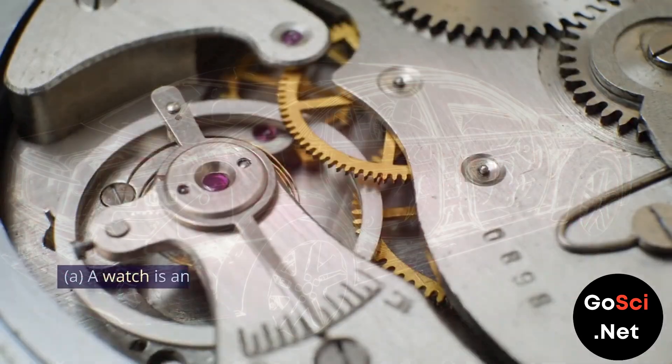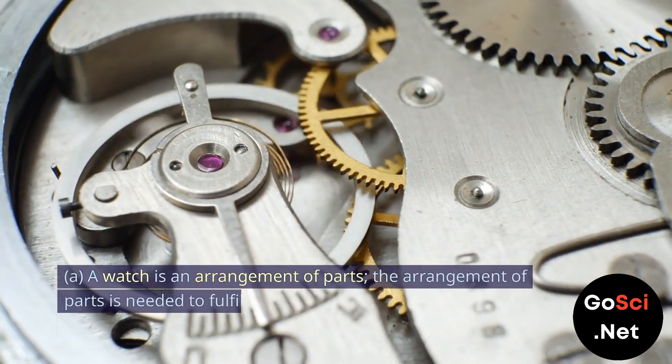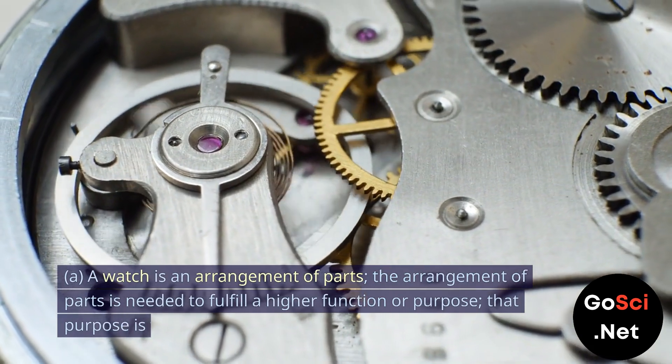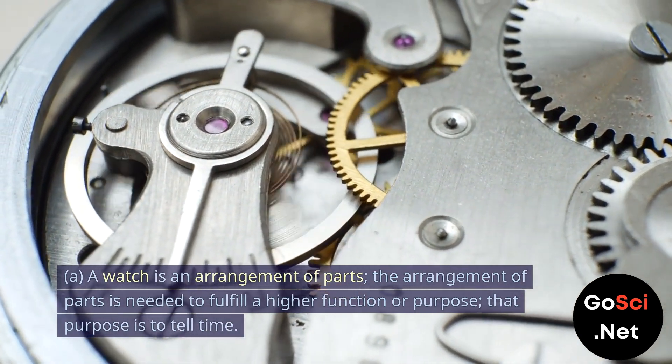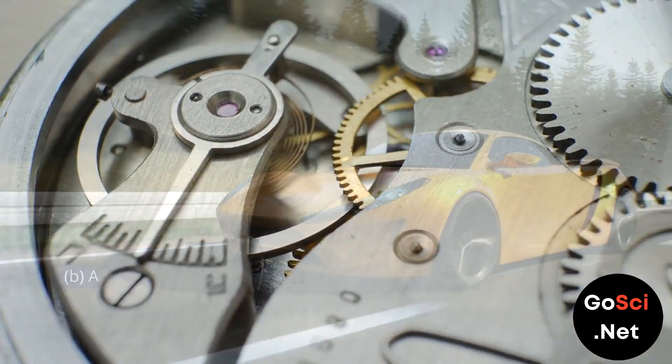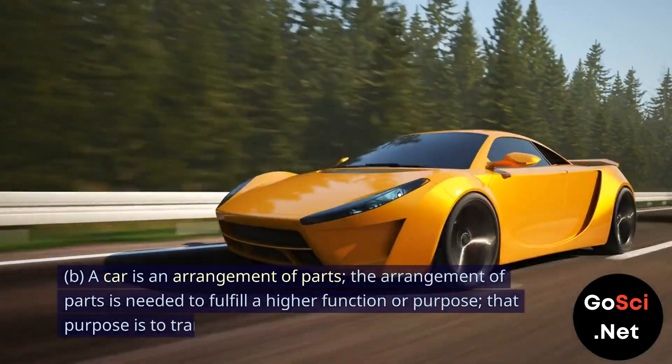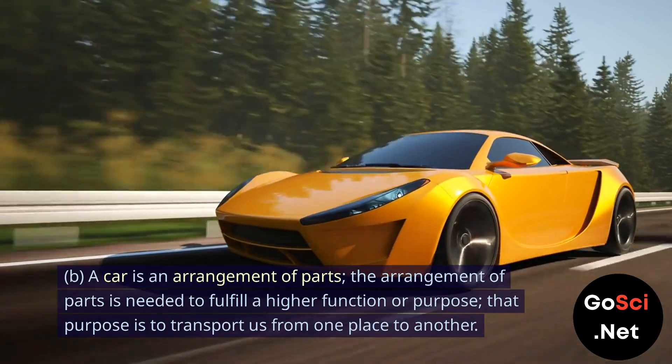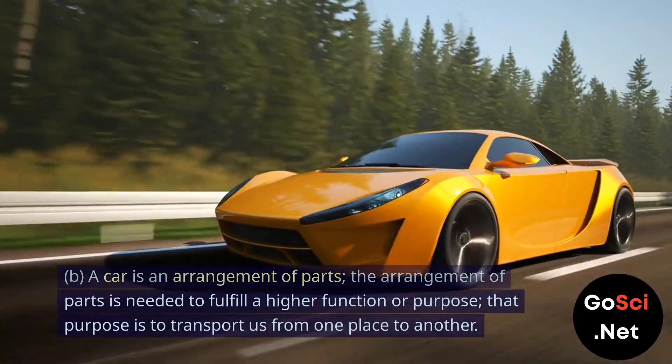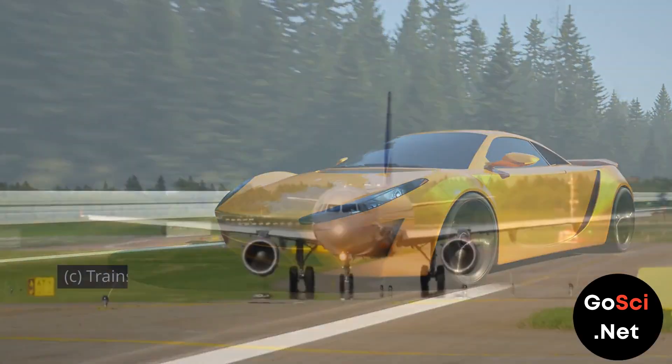Third, examples. A watch is an arrangement of parts. The arrangement of parts is needed to fulfill a higher function or purpose. That purpose is to tell time. B, a car is an arrangement of parts. The arrangement of parts is needed to fulfill a higher function or purpose. That purpose is to transport us from one place to another.